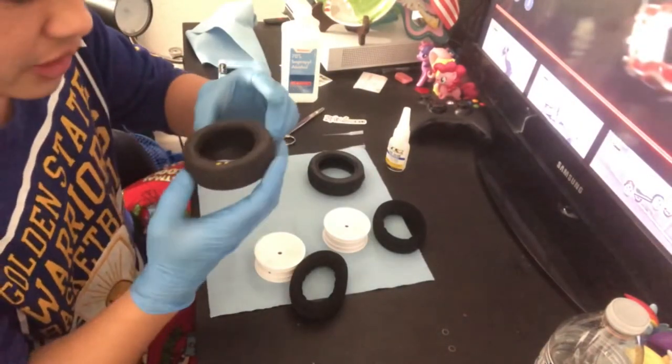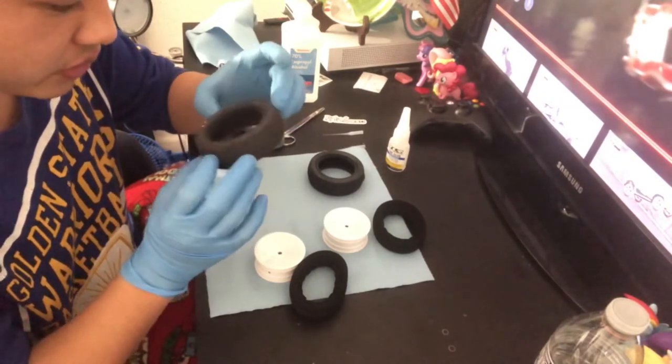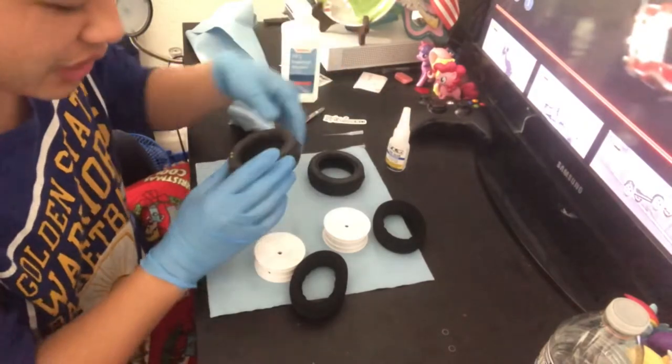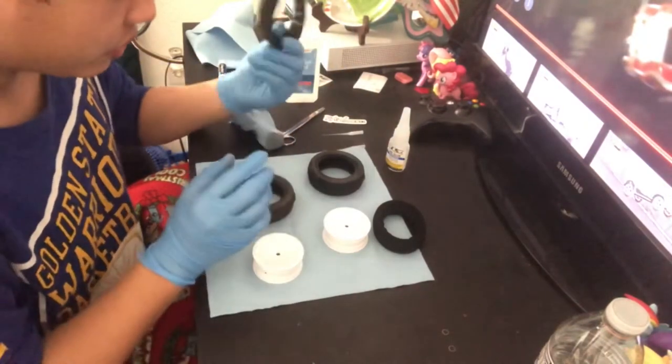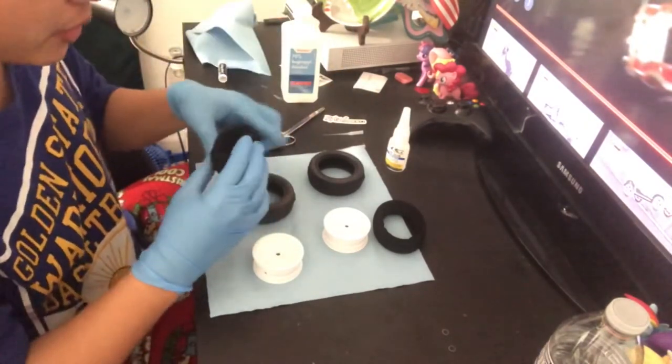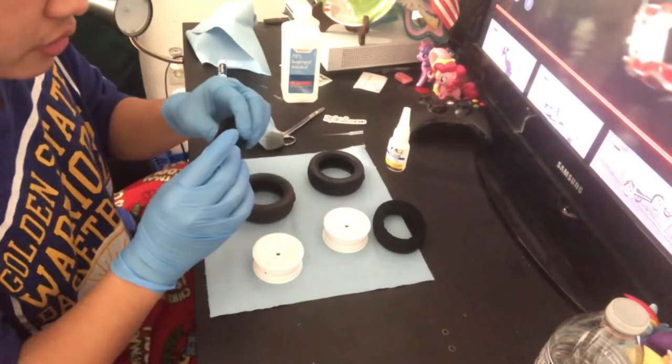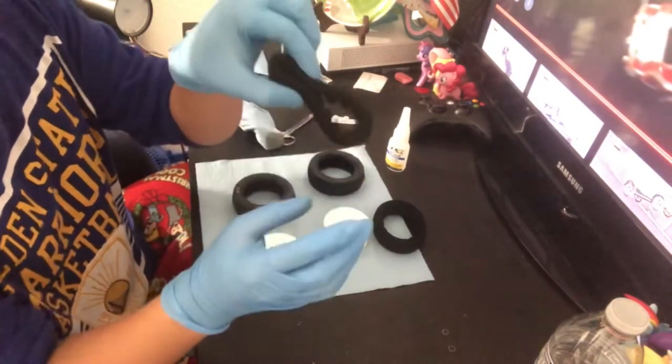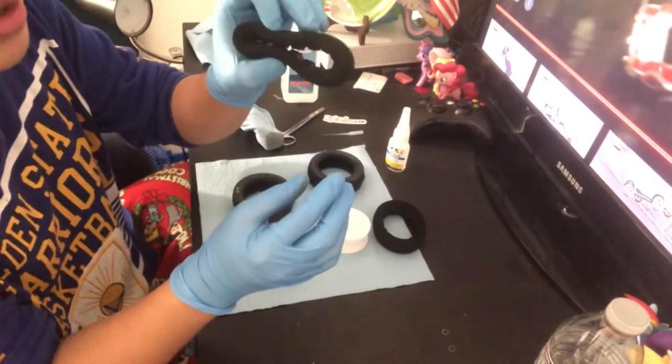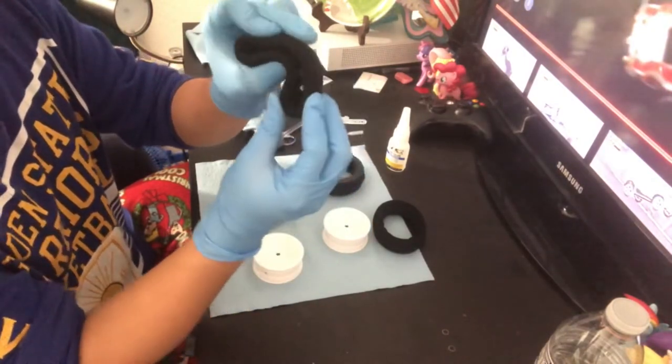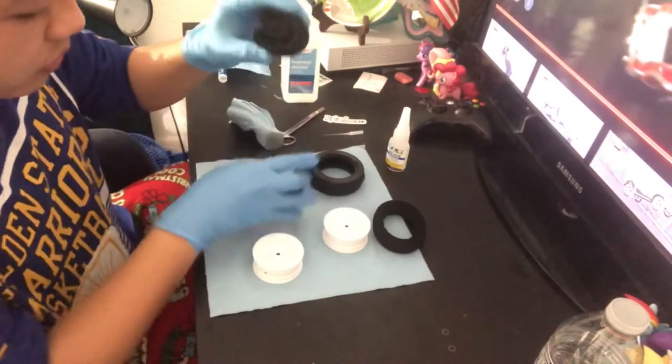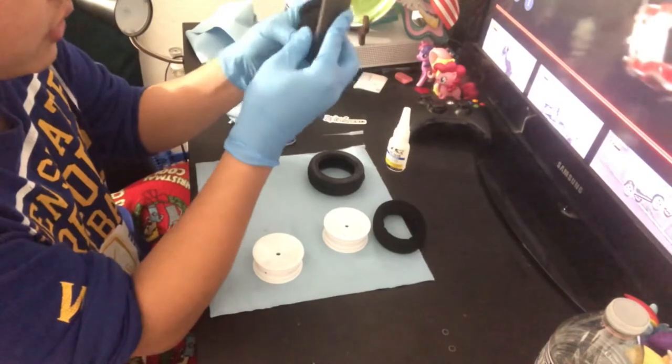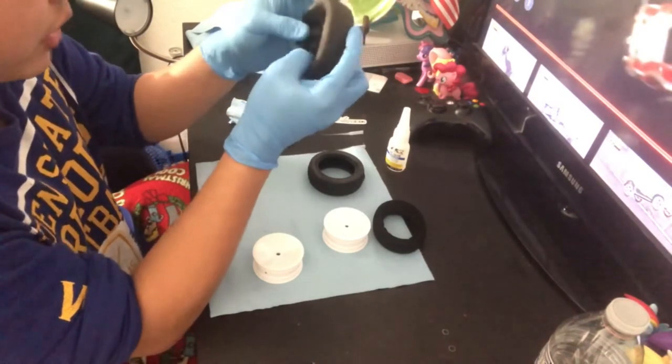Both tires are now free from that mold release thing. What I'm gonna do now is reinsert the bead. From what I've learned from other RC hobbyists, they do the tire foam insert like this, and then they put the foam insert right onto the tire itself.